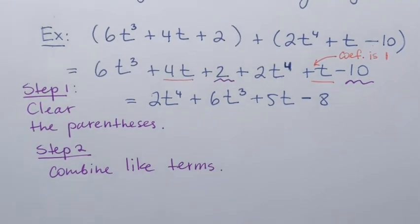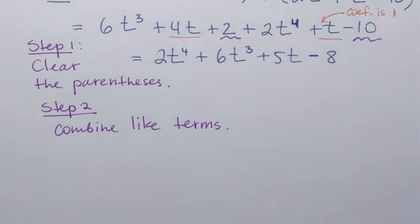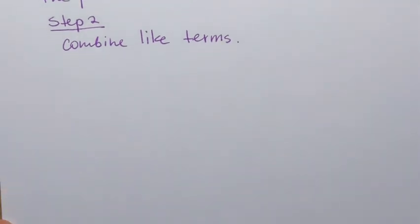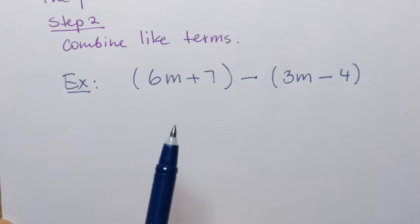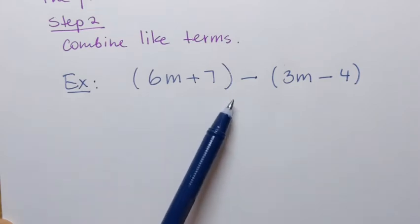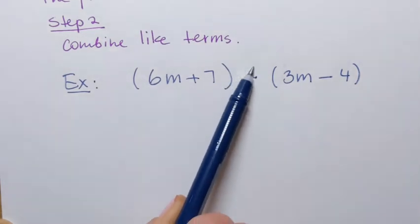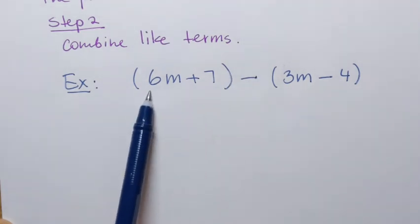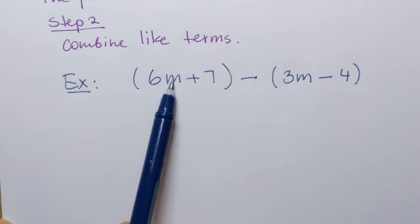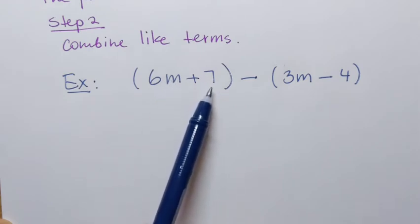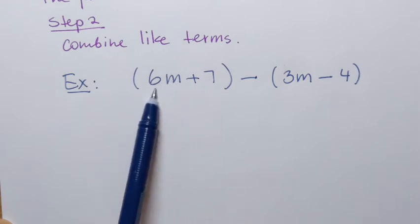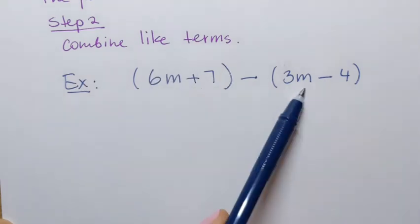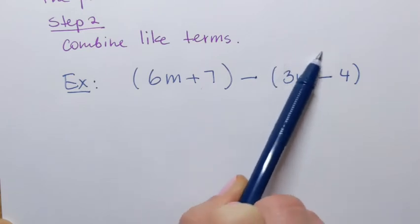Now let's try subtraction. Subtraction is a little bit more interesting. That minus sign in between the polynomials tells me I'm subtracting. This is the first polynomial — it has two terms, so it's called a binomial. We're going to take this binomial, 6m plus 7, and subtract another binomial, 3m minus 4.